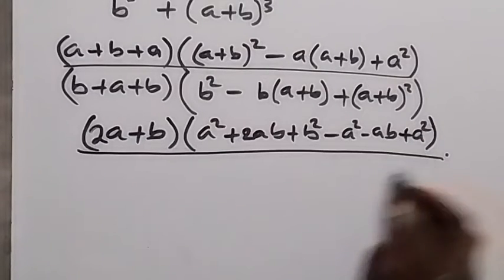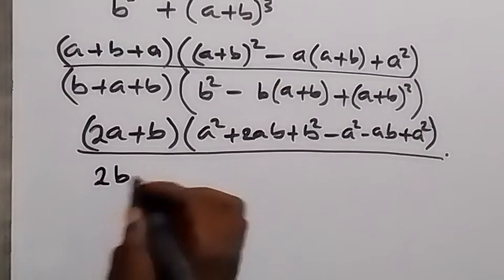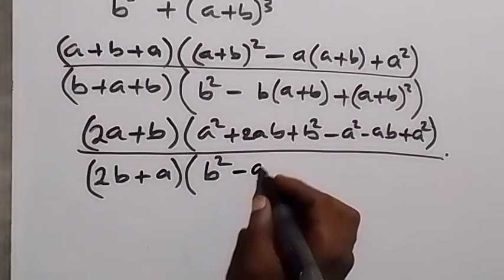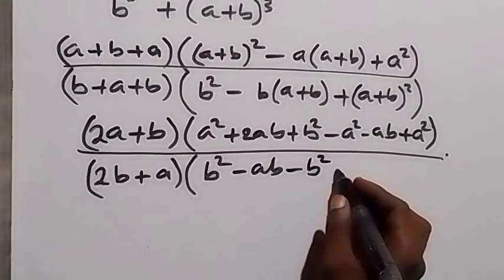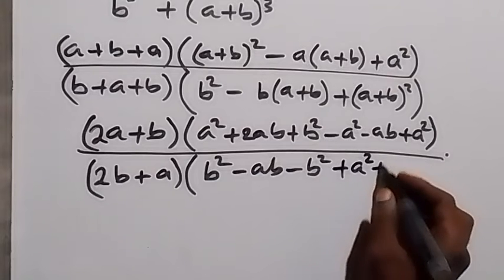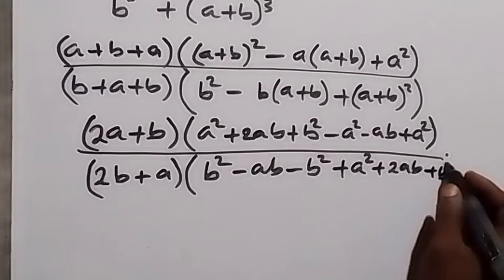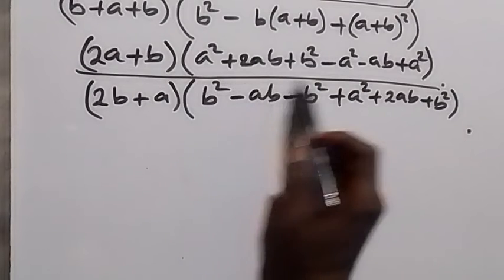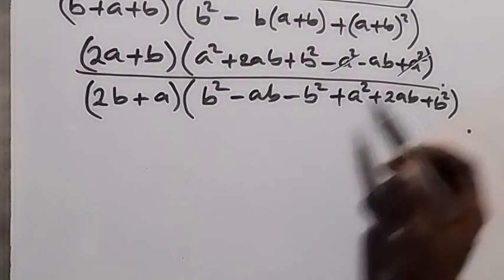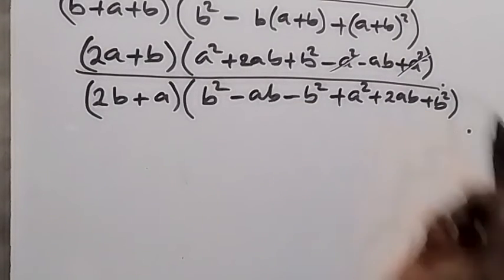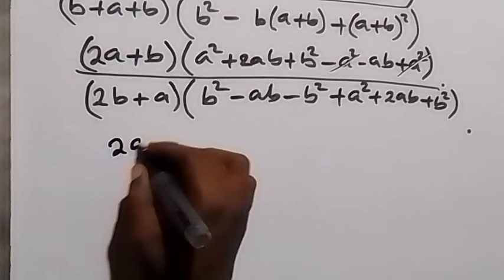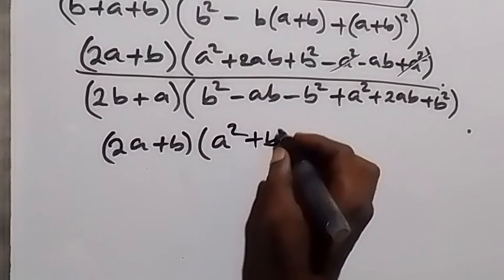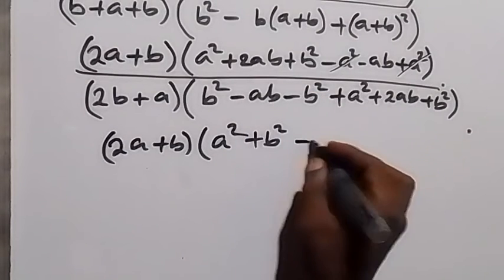Then in the denominator as well: we have b plus b, that's 2b, then plus a, then multiplied by b squared. We open the bracket: minus ab, then minus b squared. Then we expand to get plus a squared, plus 2ab, plus b squared. In the next step we simplify this bracket: minus a squared cancels with plus a squared, then we have 2ab minus ab, that will give us ab. So up there we have 2a plus b, multiplied by a squared plus ab plus b squared.